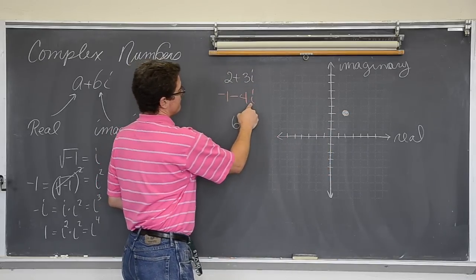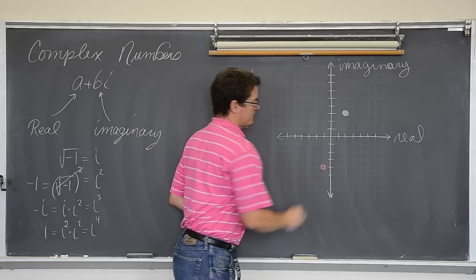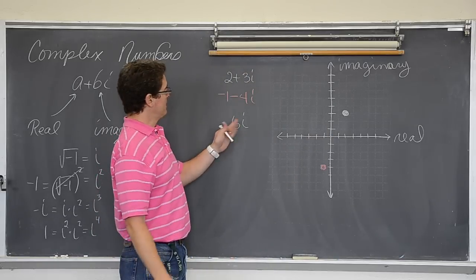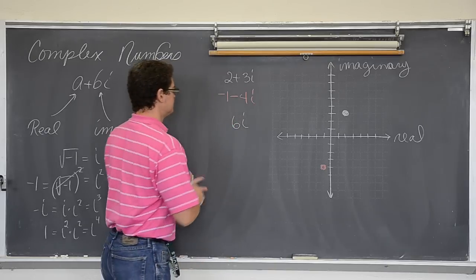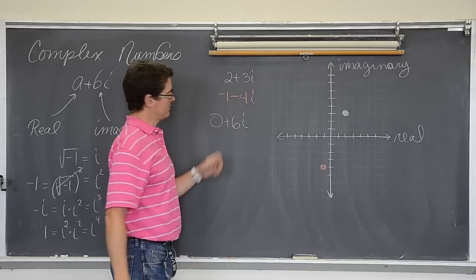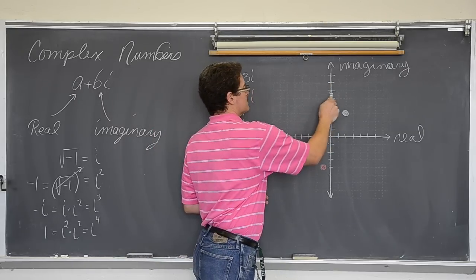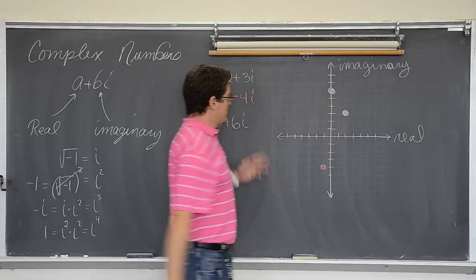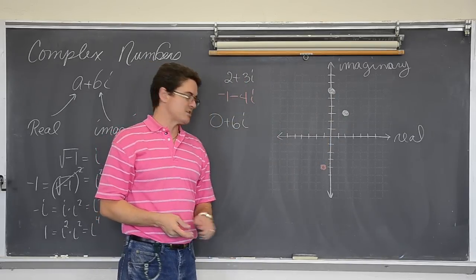Negative one minus 4i is left and down. So negative one minus 4i is there. And then this is just 6i. Well where is the real part? Right there. No left and right movement. Just go up 6. 1, 2, 3, 4, 5, 6. So there is a super quick example of how you can draw or graph these three imaginary values.